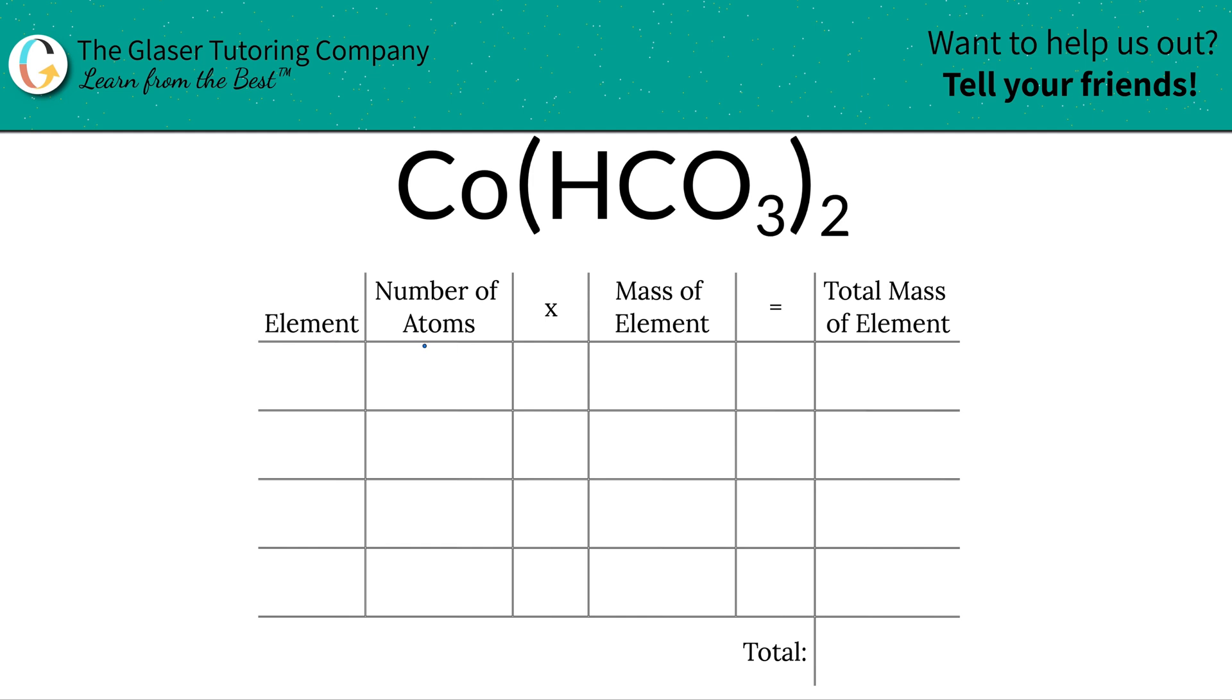The first thing is to write down the elements I see in the compound. We have cobalt, hydrogen, carbon, and oxygen.